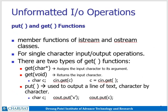Now we will see unformatted input output operations. These classes are used to produce output which will be shown in a well-defined manner. For that, we require various input output operations which are already defined in the various C++ stream classes. Now first of all we will discuss put and get functions. Put and get functions are member functions of ostream and istream classes respectively, and are used for single character input and output.